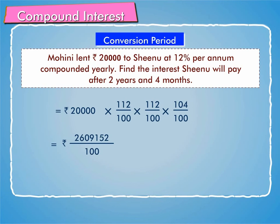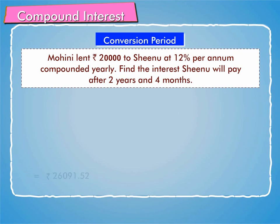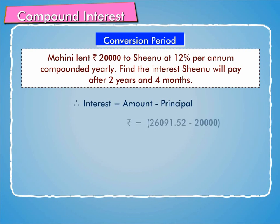After simplification, this equals Rs. 26,091.52. Therefore, the interest is Rs. 26,091.52 minus Rs. 20,000, which equals Rs. 6,091.52.